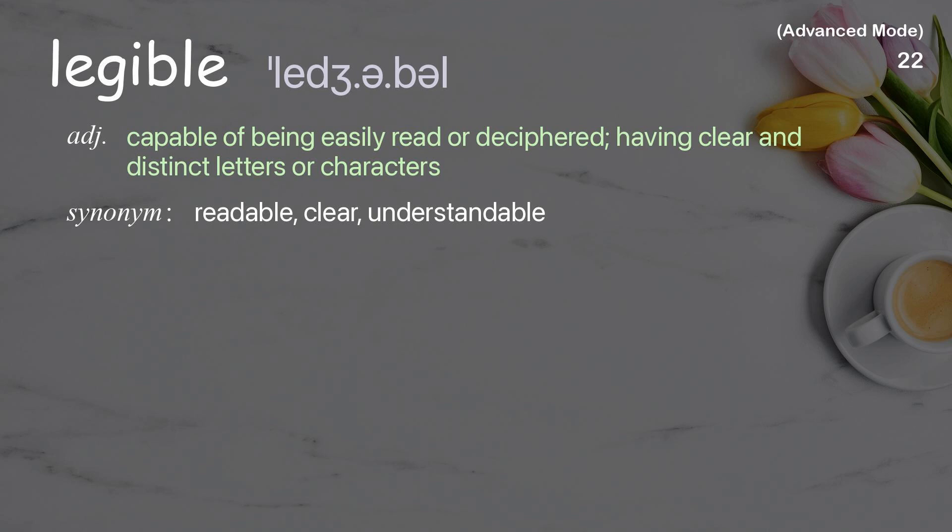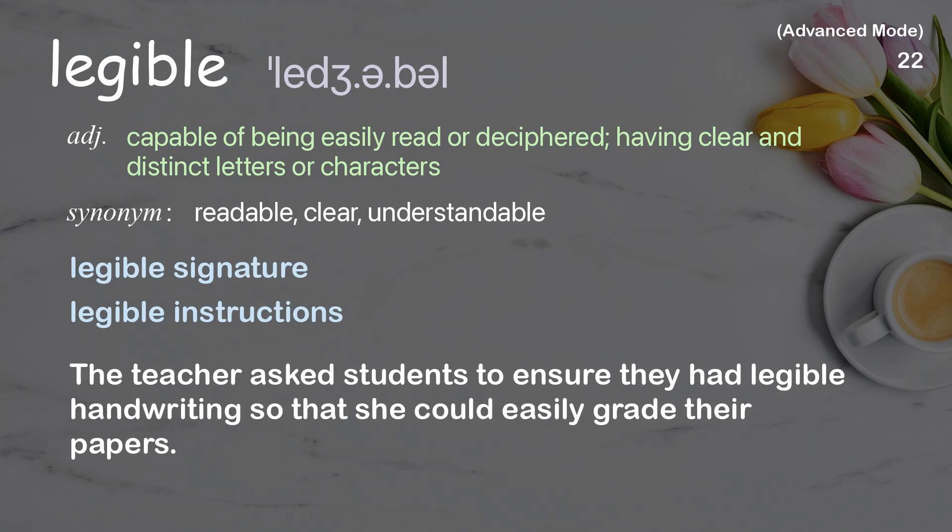Legible: capable of being easily read or deciphered; having clear and distinct letters or characters. Examples: legible signature, legible instructions. The teacher asked students to ensure they had legible handwriting so that she could easily grade their papers.